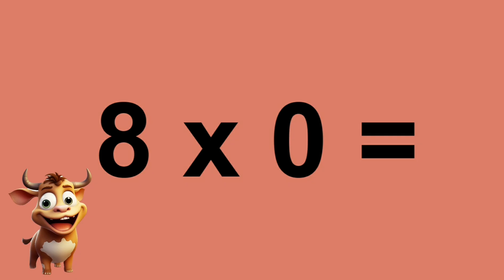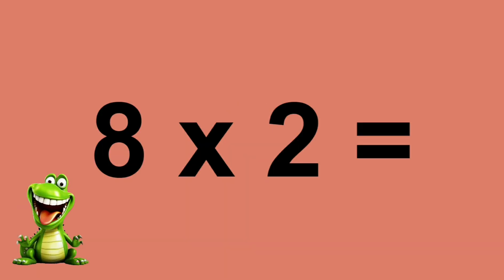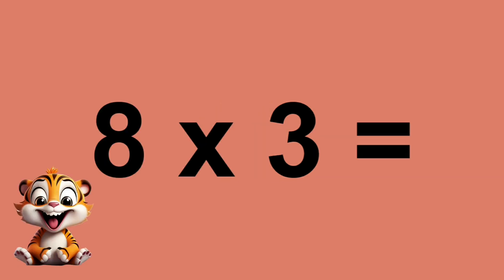Eight times zero equals zero. Eight times one equals eight. Eight times two equals sixteen. Eight times three equals twenty-four.